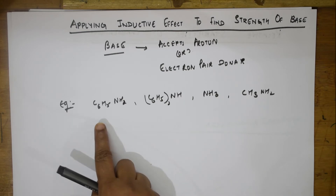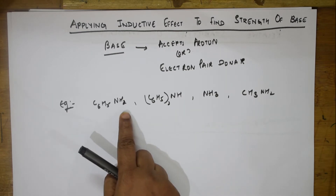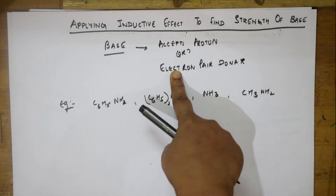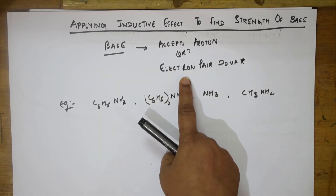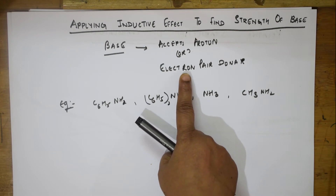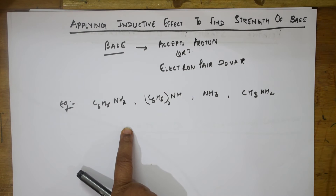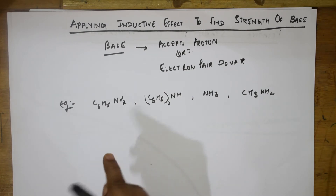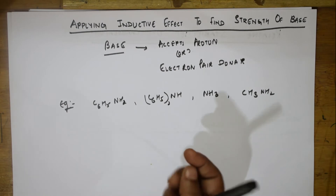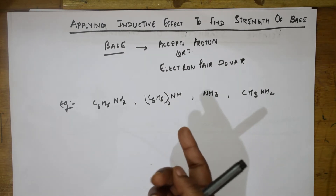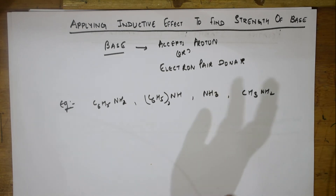The first important concept to remember: a base is something which accepts a proton or donates an electron pair. Now I have to apply the inductive effect. We have two types: plus-I effect and minus-I effect. Plus-I effect groups are electron-releasing groups, and minus-I effect groups are electron-withdrawing groups.